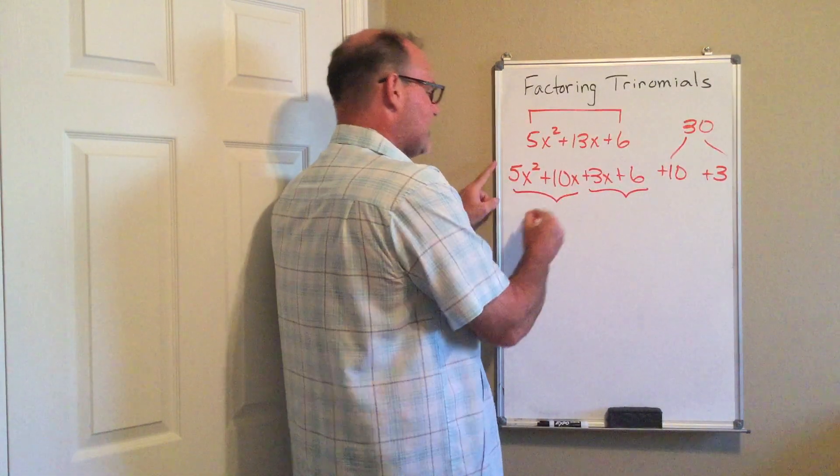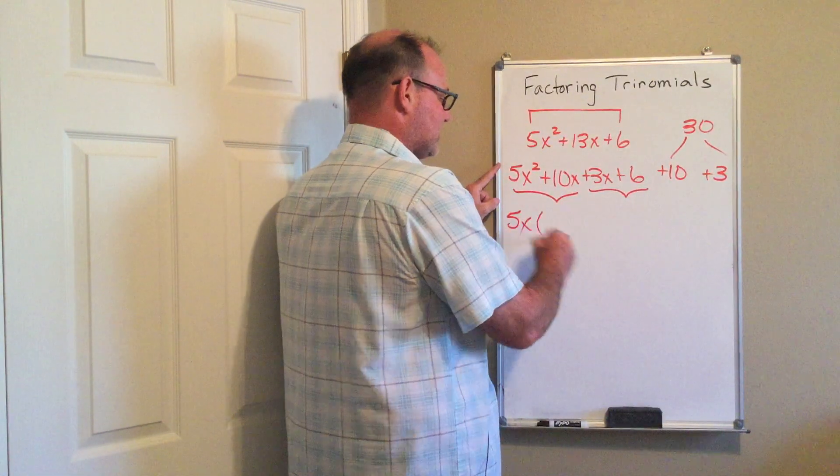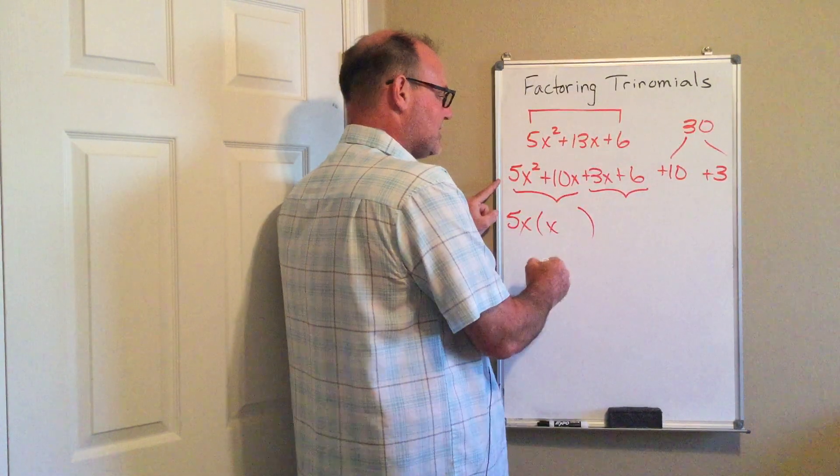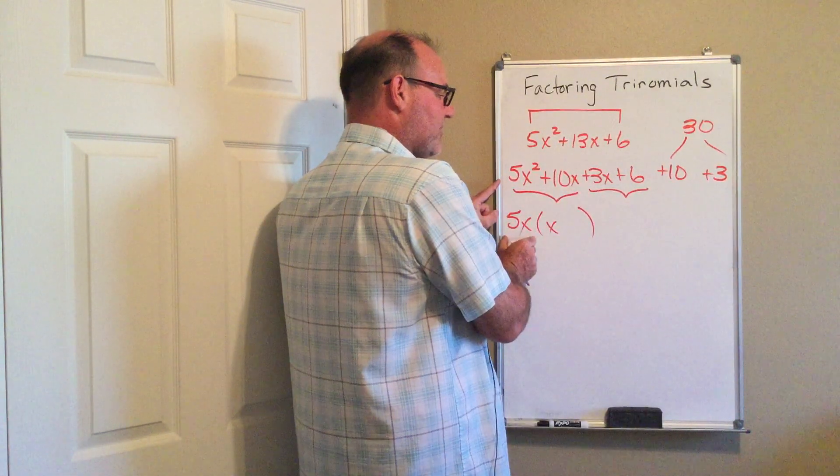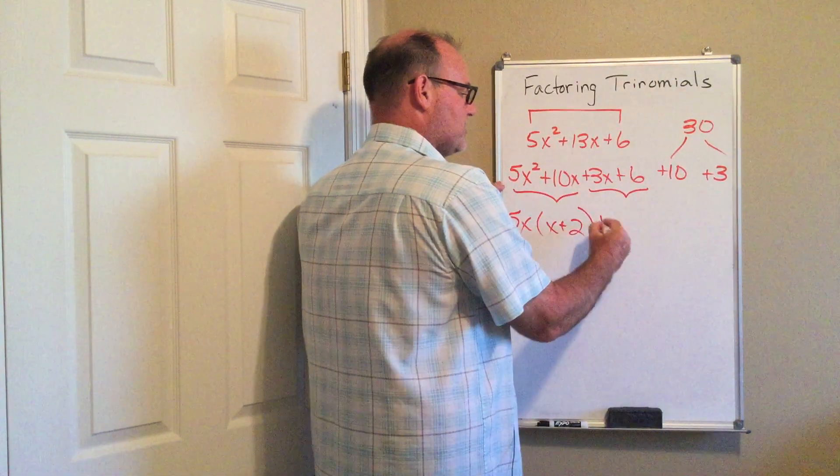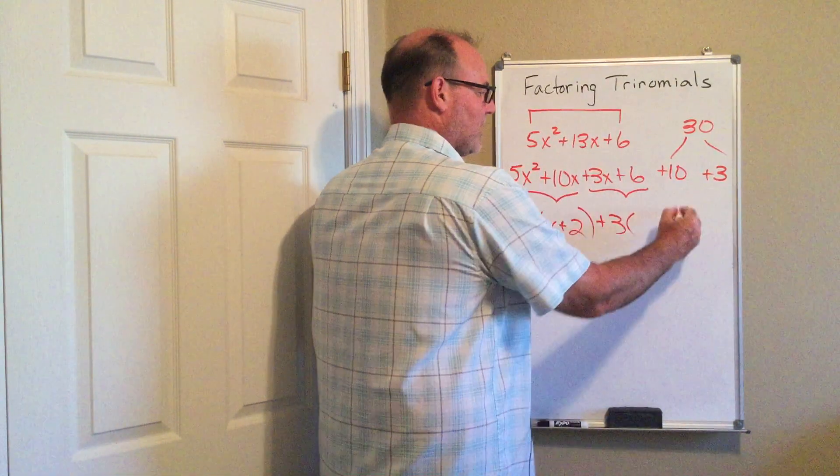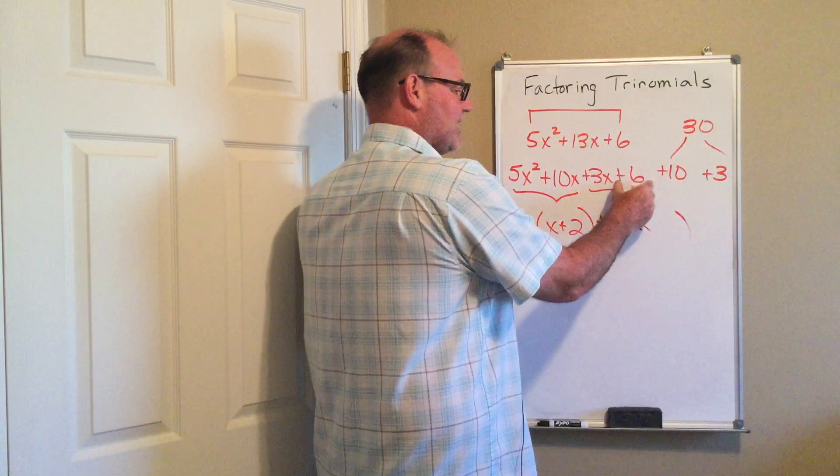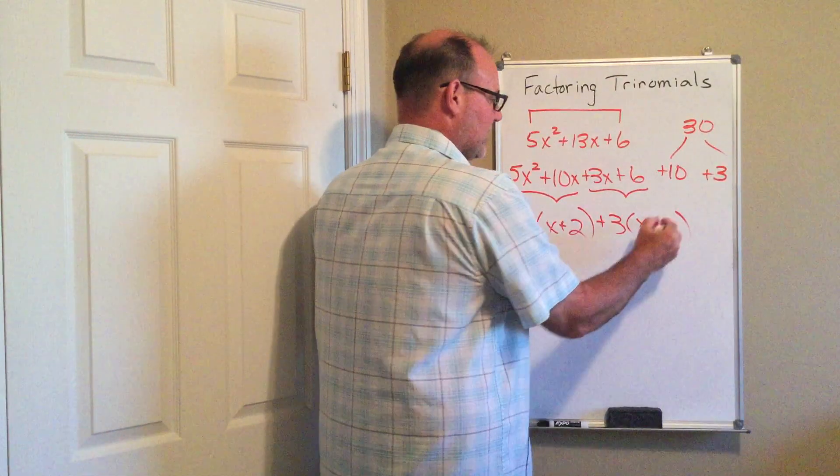First two terms, I'm going to factor out a 5x. 5x squared when I factor out the 5x leaves me x. 10x when I factor out the 5x leaves me plus 2. The second pair of terms, I'm going to factor out a 3. 3x when I factor out the 3 leaves me x. 6 when I factor out the 3 leaves me plus 2.